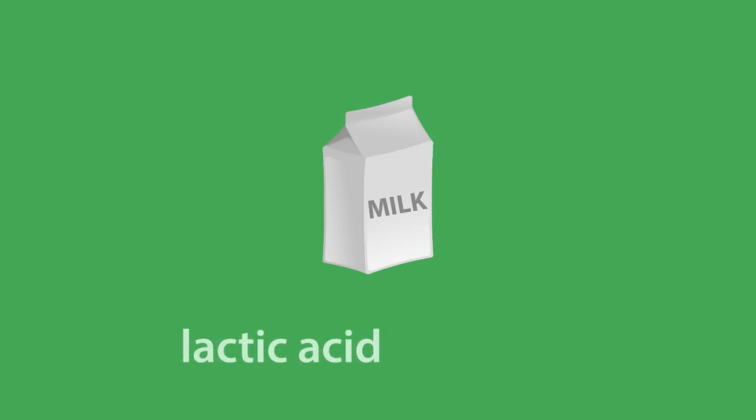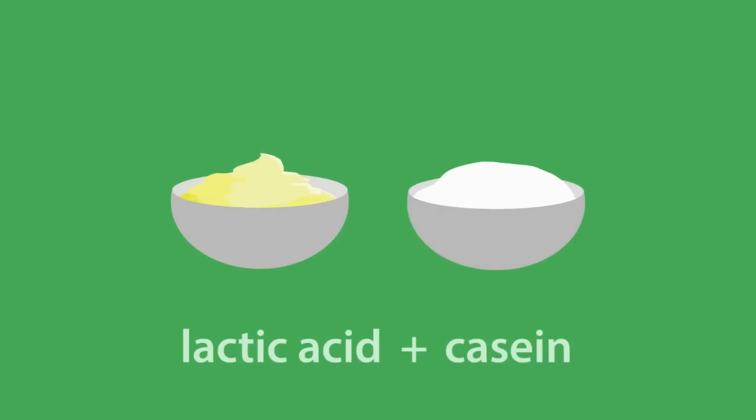Milk contains lactose and certain types of bacteria can ferment lactose into lactic acid. The lactic acid then reacts with a certain milk protein called casein. The combination of lactic acid and curdled casein gives yogurt and sour cream their texture and taste.